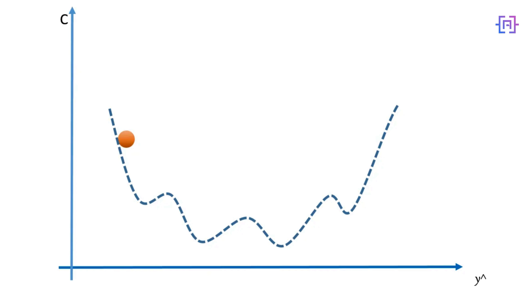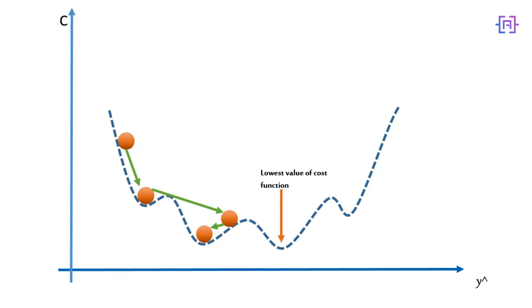The issue with gradient descent is that it requires the cost function to be convex, meaning it has one global minimum. But what if the cost function is not convex? If we choose a cost function that is not the squared difference between the output value and the actual value, then in a multi-dimensional space it can actually become non-convex. In that case, using the normal gradient descent method, we could find a local minimum of the cost function rather than the global one. Therefore, we would not have the correct weights and we would not have an optimized neural network.